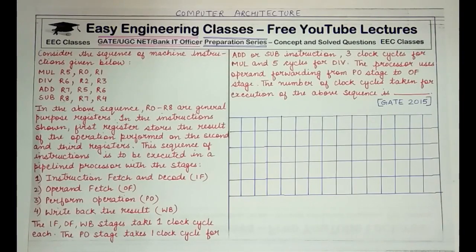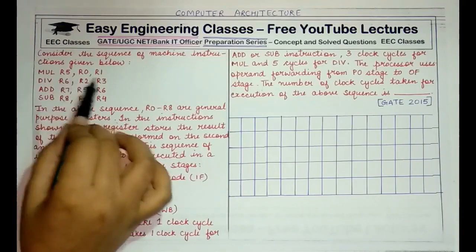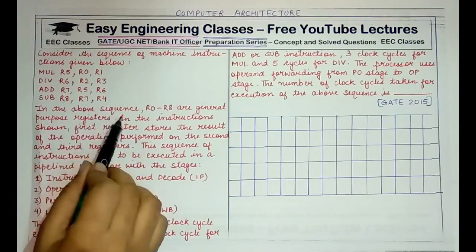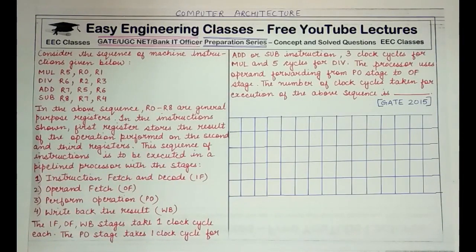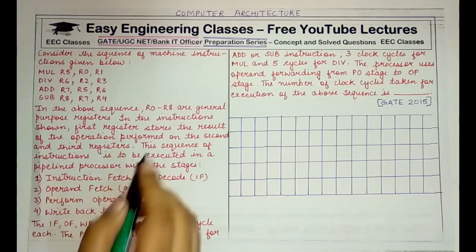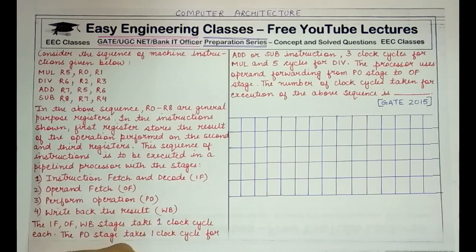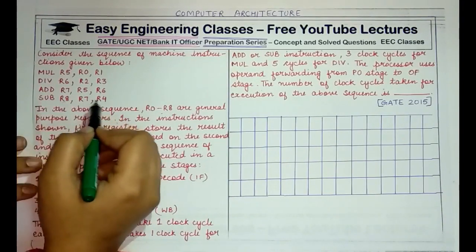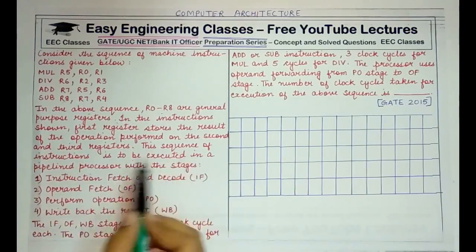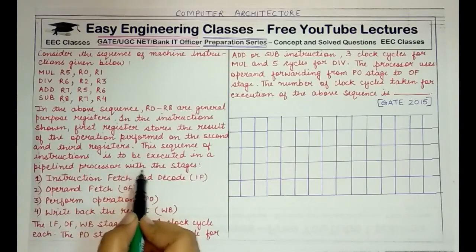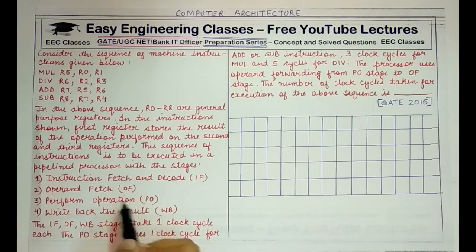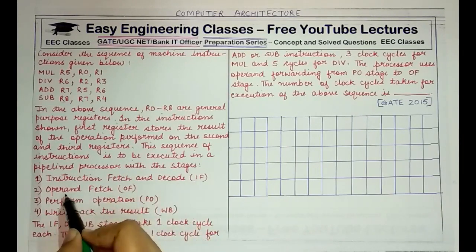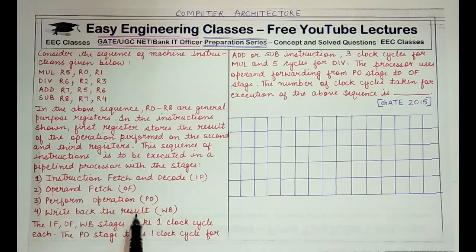Consider the sequence of machine instructions given below: multiply, divide, add, subtract with corresponding three registers. R0 to R8 are general purpose registers. The first register stores the result of the operation performed on the second and third registers. This sequence is executed in a pipelined processor with four stages: instruction fetch and decode (IF), operand fetch (OF), perform operation (PO), and write back result (WB).